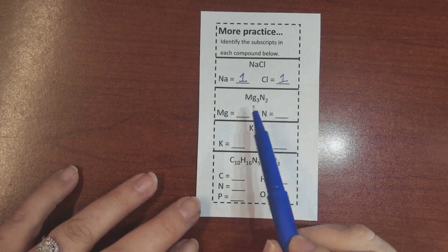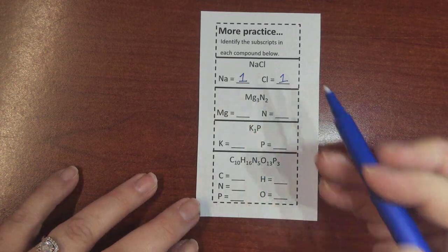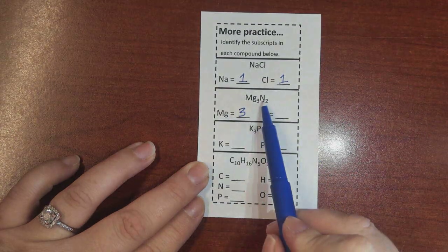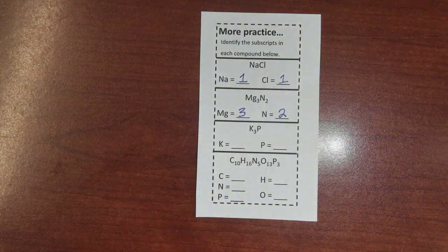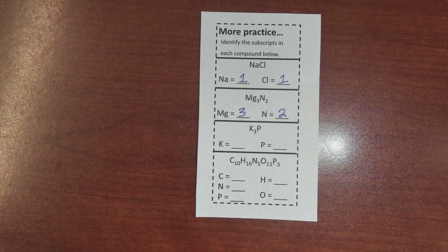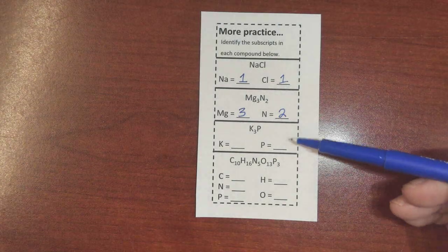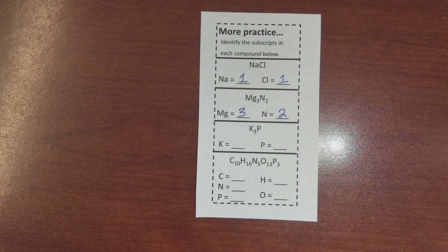Let's try the next one: Mg3N2. The subscript for Mg is three and the subscript for N is two. Now take a moment to work on the next two by yourself — you're going to identify the subscript of each element in those two compounds.